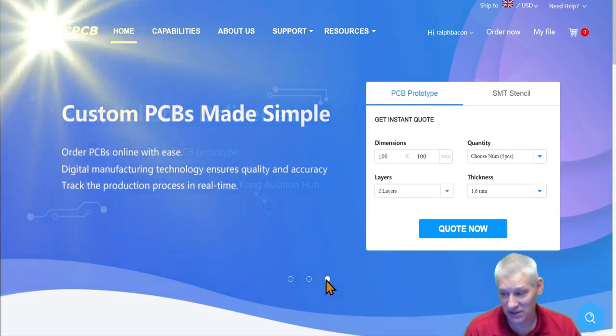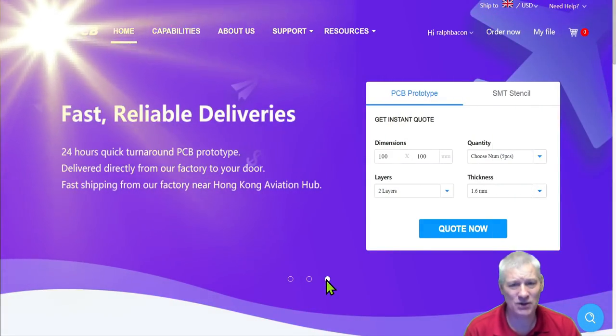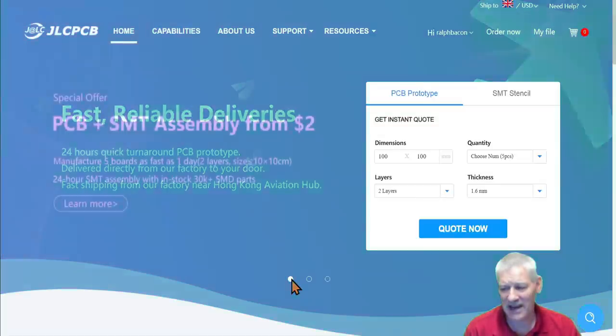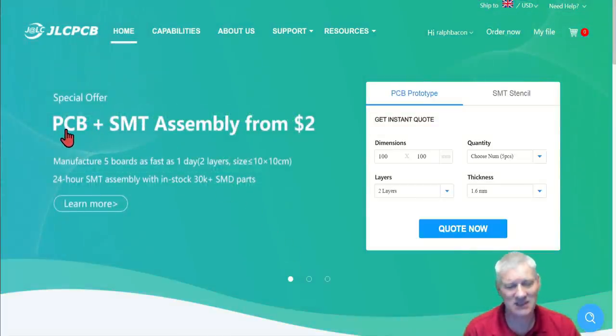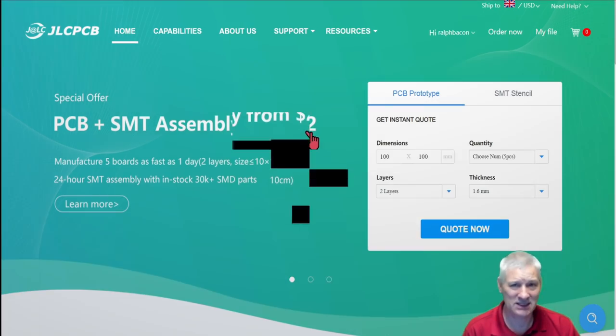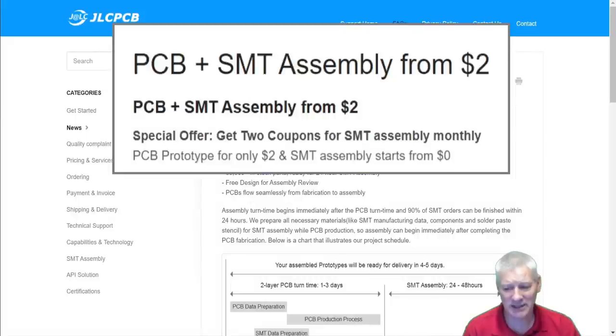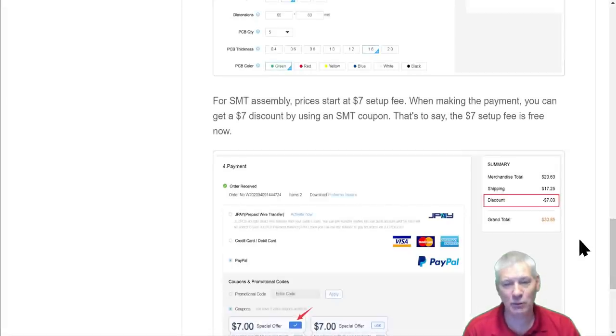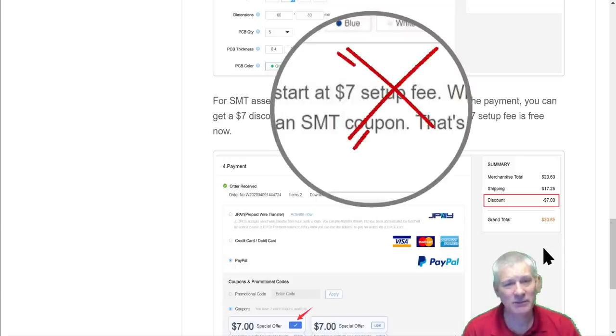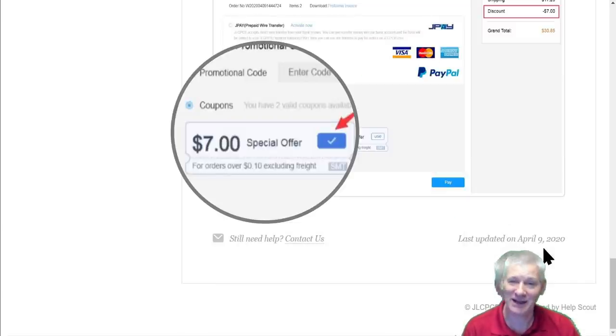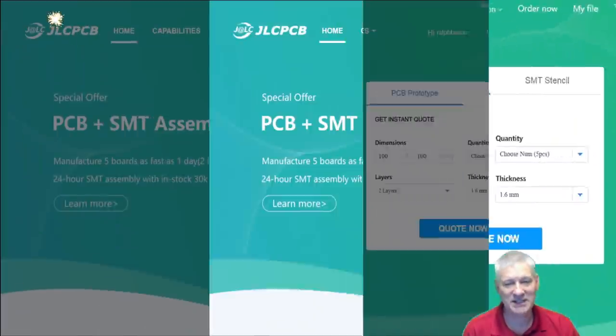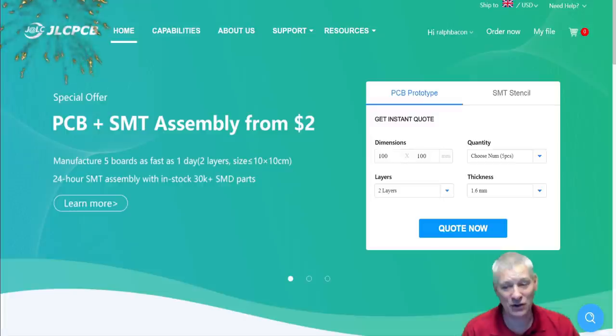JLC PCB offers custom PCBs with fast, reliable delivery. But today I want to talk about their SMT and PCB assembly from just $2. Let's have a look at what that consists of, shall we? So as you can see here, the PCB and SMT assembly is available from $2. How do they do that? So normally there's a $7 setup fee, but in this case they're going to give you a voucher, so you don't have to spend that money. All you do is pay for your components. Simple. PCB SMT assembly from $2 from JLCPCB. Why don't you try them out now?